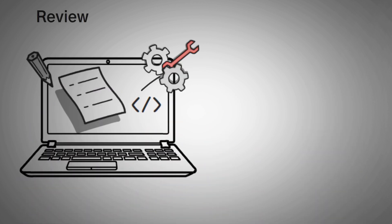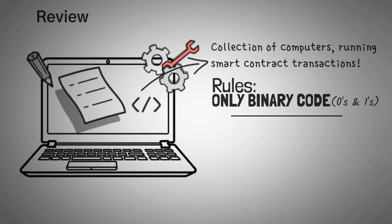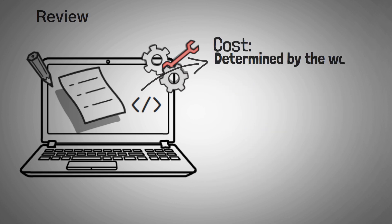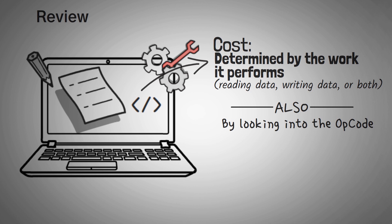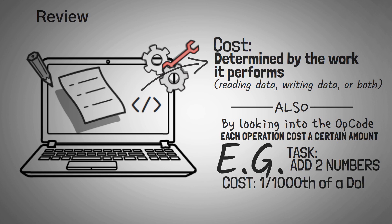As a review: the EVM is a virtual computer that's a collection of thousands of individual computers all running the same smart contract transactions. This virtual computer has rules and can only understand binary code consisting of ones and zeros. To add transactions to the EVM, developers create secondary languages such as Solidity, which allows humans to write code in the English language. The cost of a smart contract is determined by what work the EVM performs — whether it's reading data, writing data, or both — and how much data it reads or writes. We can know specifically how much a smart contract will cost by looking at the opcode, which is the operational code or instructions of a transaction, where each operation costs a certain amount of money to perform. For instance, adding two numbers might be one one-thousandth of a dollar. Add up all of these opcodes and their costs, and you get the total cost to perform a smart contract transaction.